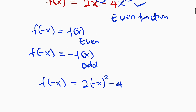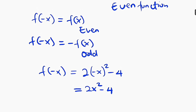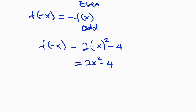Because this is our original function, let's simplify this and see. This is 2 multiplied by negative x squared. That negative, because the power is even, will make it positive. So this becomes 2x squared minus 4. But look at this function — it is exactly the same as the original function. So we say that this is f of x, which is the same thing as f of negative x. And so we say this is an even function.